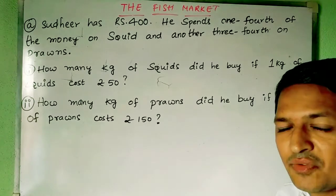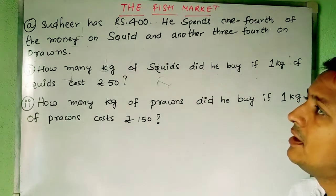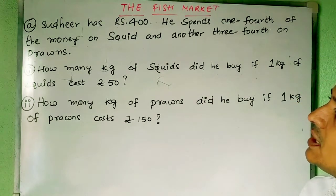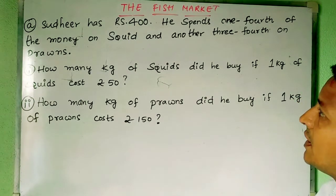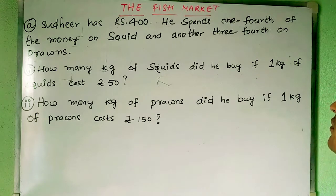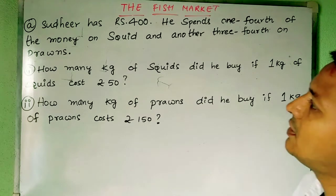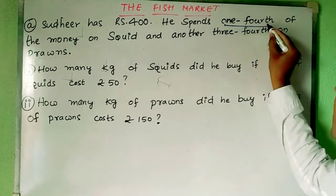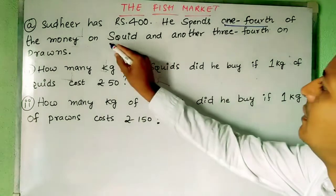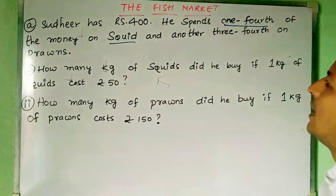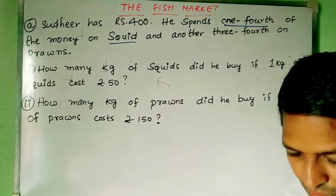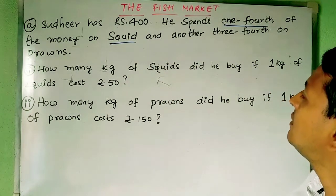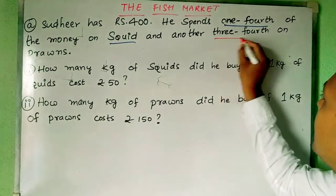Hi children, let us find the solution for the assignment. Sudhir has ₹400. He spends one fourth of the money on squid and another three fourths on prawns.